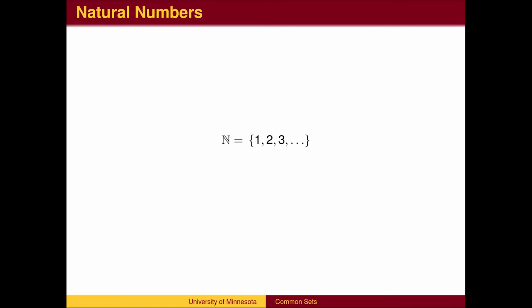After learning how to count, we learned how to add, and the natural numbers were still sufficient. 3 plus 5 was still in the set. We then learned to subtract. 8 minus 5 equals 3. Everything is still okay.